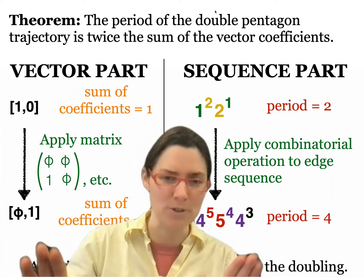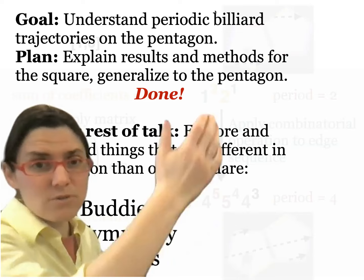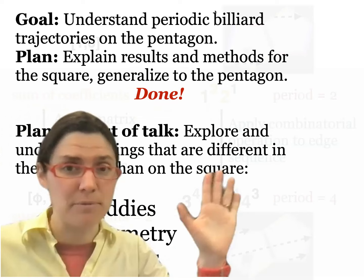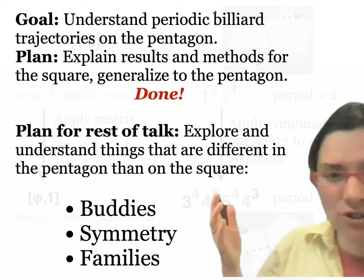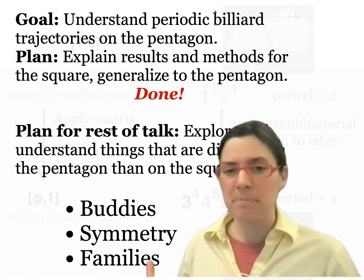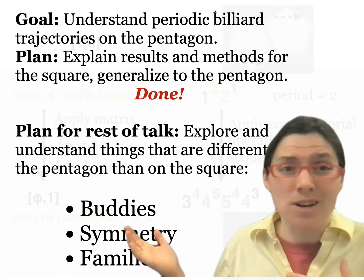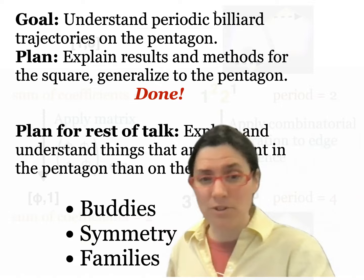That is the theorem. Amazing. Our goal was to understand periodic trajectories on the regular pentagon — those beautiful rainbow pictures from the first slide. The plan was to explain results and methods for the square and then generalize to the pentagon, and we did that. But we still have extra time, so I'm going to show you some things that are different in the pentagon and other shapes compared to the square. I call them buddies, symmetry, and families — behavior that people thought didn't exist but actually does.